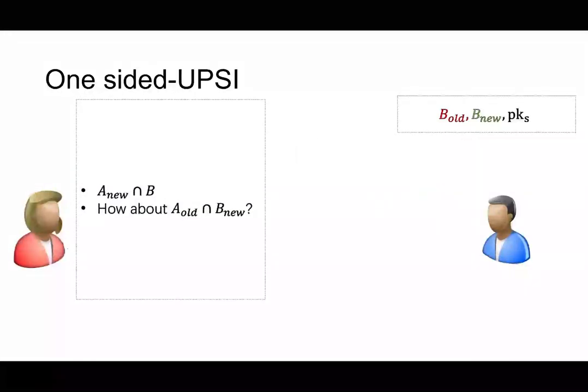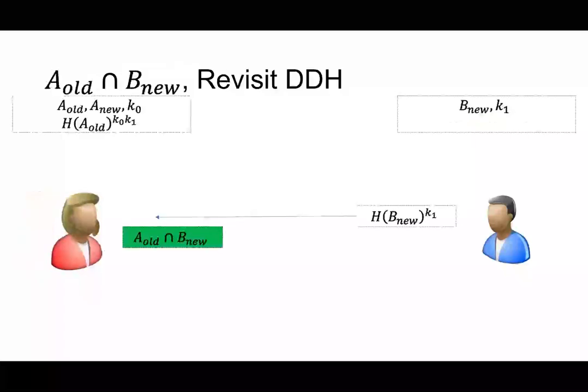How about the A_old intersecting with B_new? We can use the DDH again. Assuming that the client maintaining A_old raised to K0, K1 and as the B_new comes in, the server can raise it to K1 and send it to the client. Client can raise to K0 again and get the intersection.